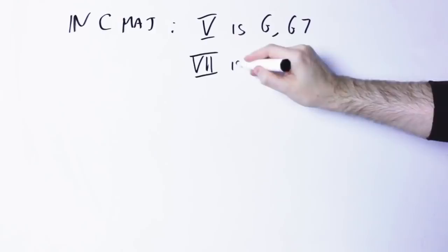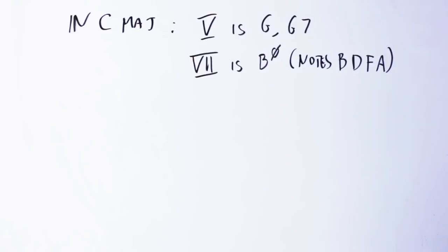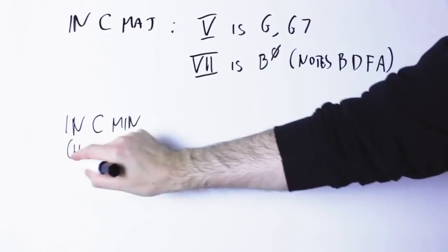In C major, the seventh chord of the key, or if you want, the chord built on the seventh degree of the scale, is a B half diminished. The notes are B, D, F and A. In C minor, the chord built on the seventh degree of the scale is a B diminished seventh chord. Notes B, D, F, A flat.